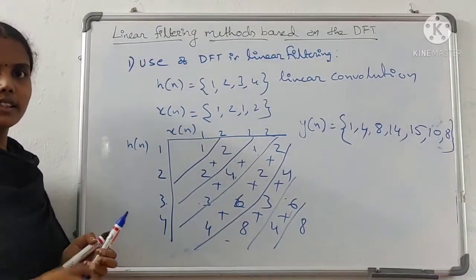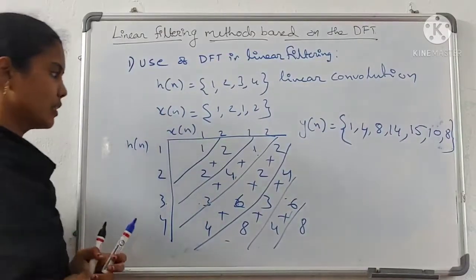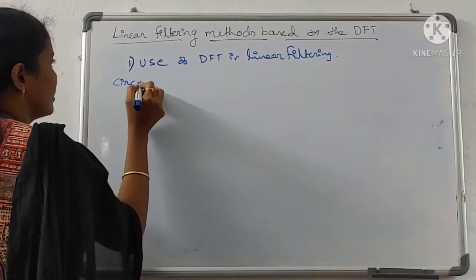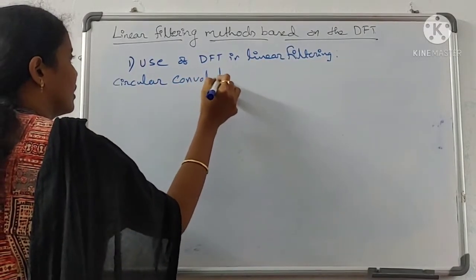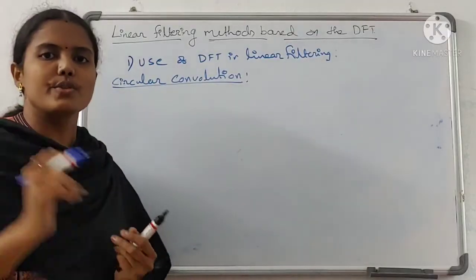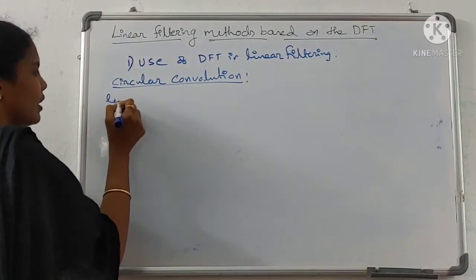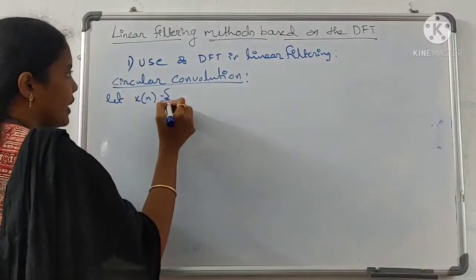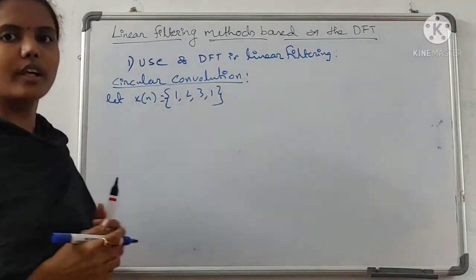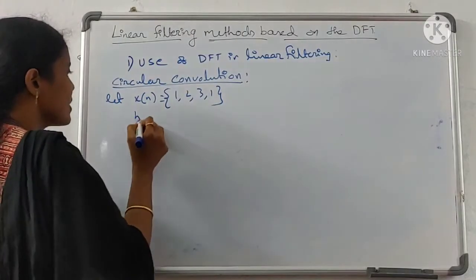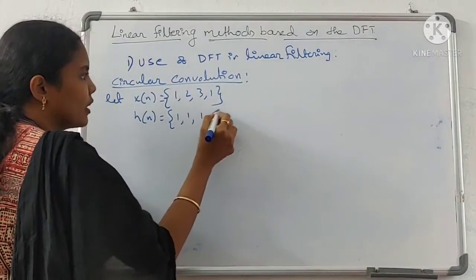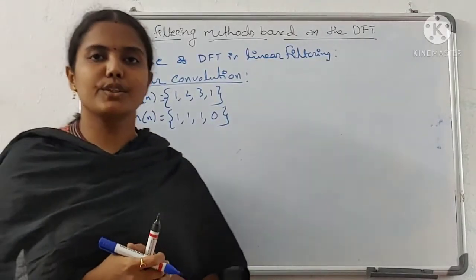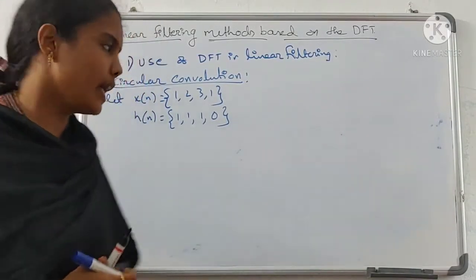Now let us see the second type: circular convolution. Let x(n) = {1, 2, 3, 1} and H(n) = {1, 1, 1, 0}. To perform circular convolution using the matrix form, write H(n) as an N×N matrix.